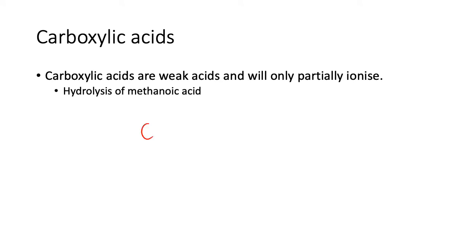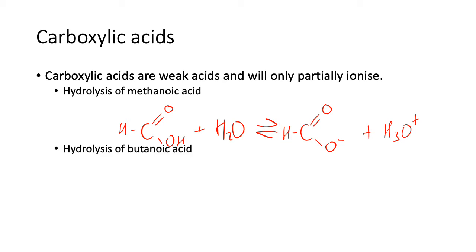Methanoic acid plus water, double arrow to form the carboxylate ion - in this case, the methanoate ion - methanoate because it's a meth group. That's partially ionized, so don't forget the double arrows. You can try hydrolysis of butanoic acid.